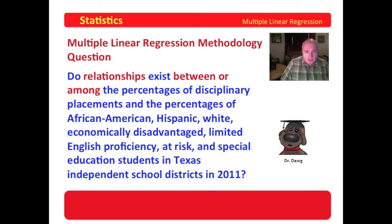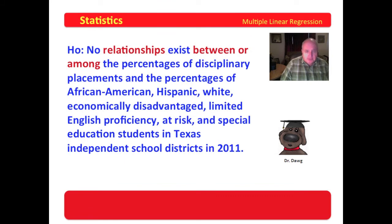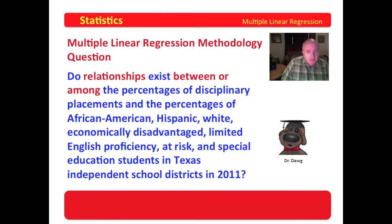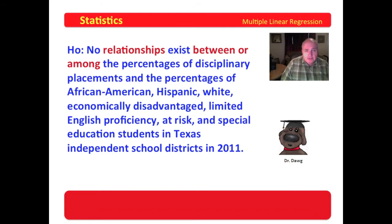It's a pretty clever way to write the question. When I read it, it says to me that this is a multiple linear regression methodology question. Multiple linear regression is about relationships because it is basically founded in correlational analysis. Remember the hypothesis — if you have a question that says 'do relationships exist,' the null hypothesis is 'no relationships exist,' worded exactly like the research question except written as a statement. The null hypothesis is that no relationships exist between or among the percentages of disciplinary placements and the percentages of African-American, Hispanic, white, economically disadvantaged, limited English proficiency, at risk, and special education students in Texas independent school districts in 2011.